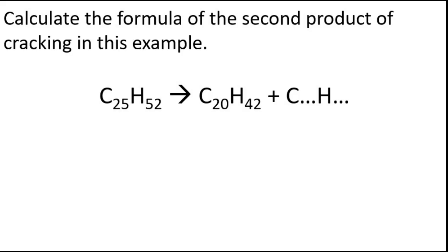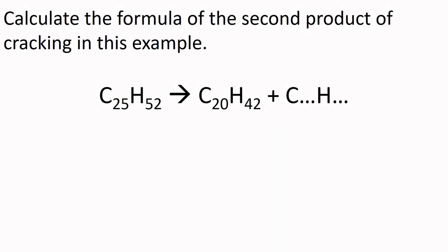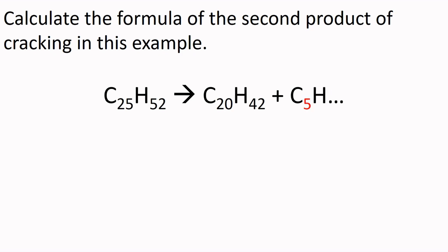Now in your exam you might be asked to solve a cracking equation like this one. How do we work out the formula of the second product? Well, we know that there has to be a conservation of mass, so the left and right hand sides need to be balanced. 20 of the 25 carbons are accounted for, so there must be five carbons. 42 of the 52 hydrogens have been used, so that leaves 10 remaining. So the answer is C5H10.